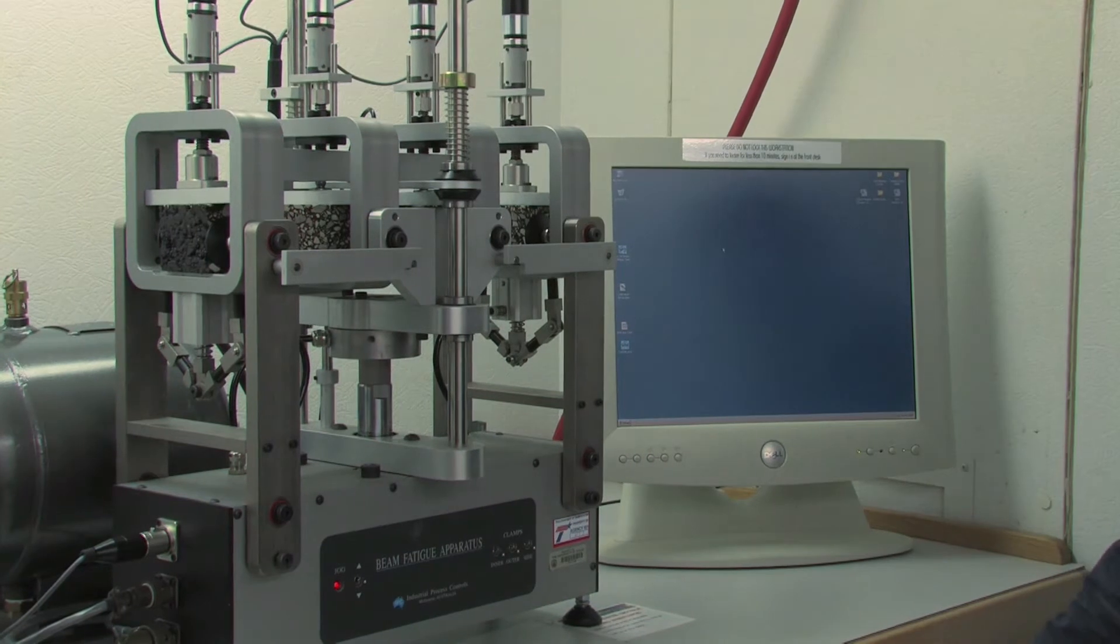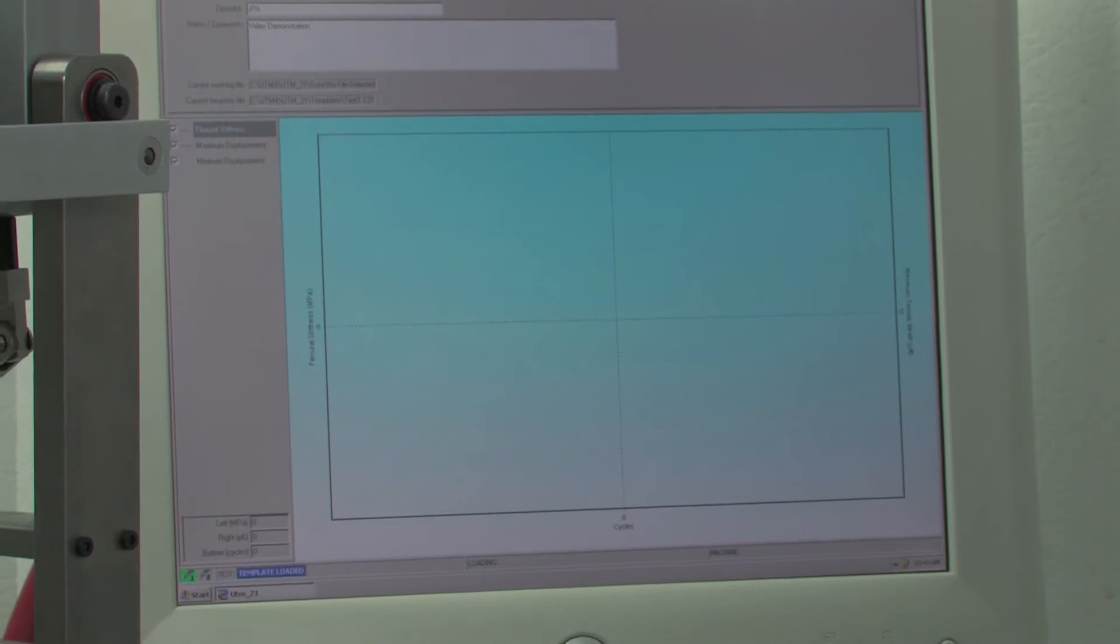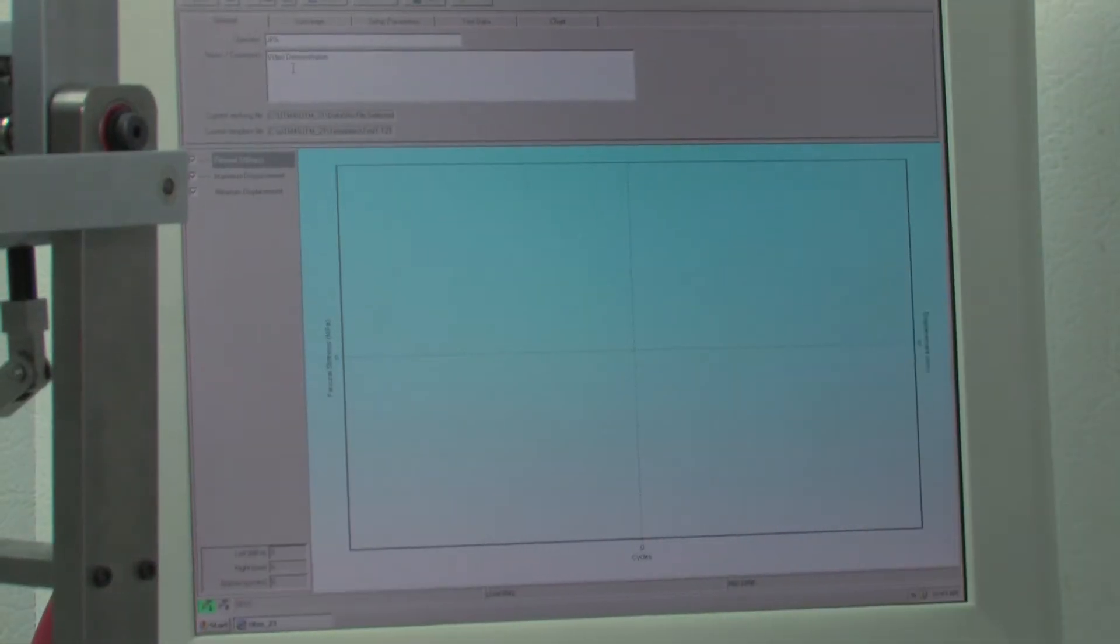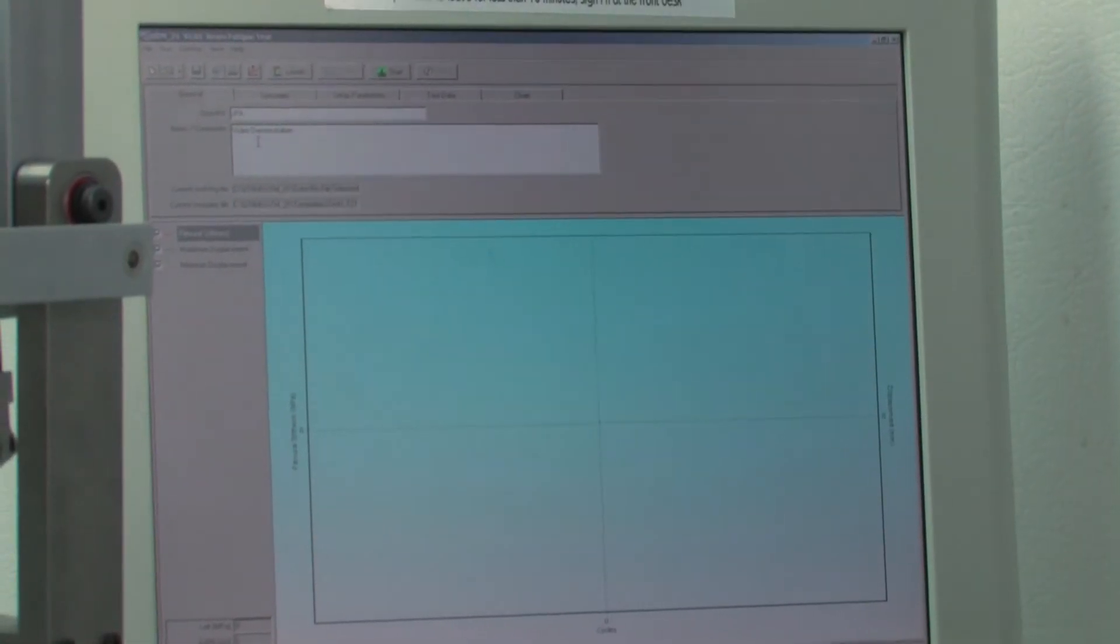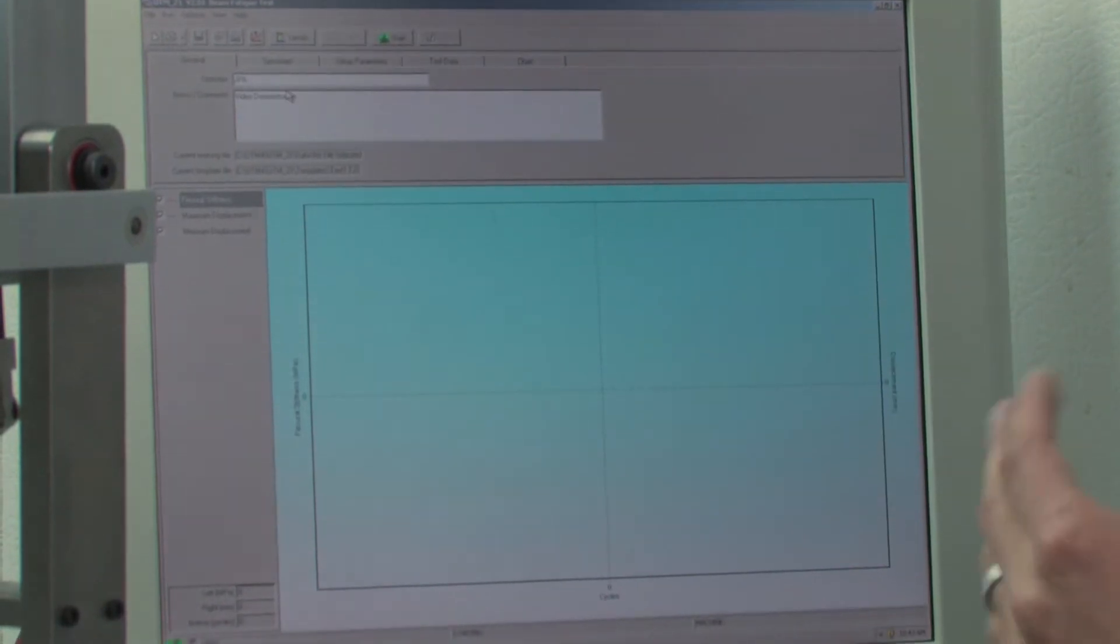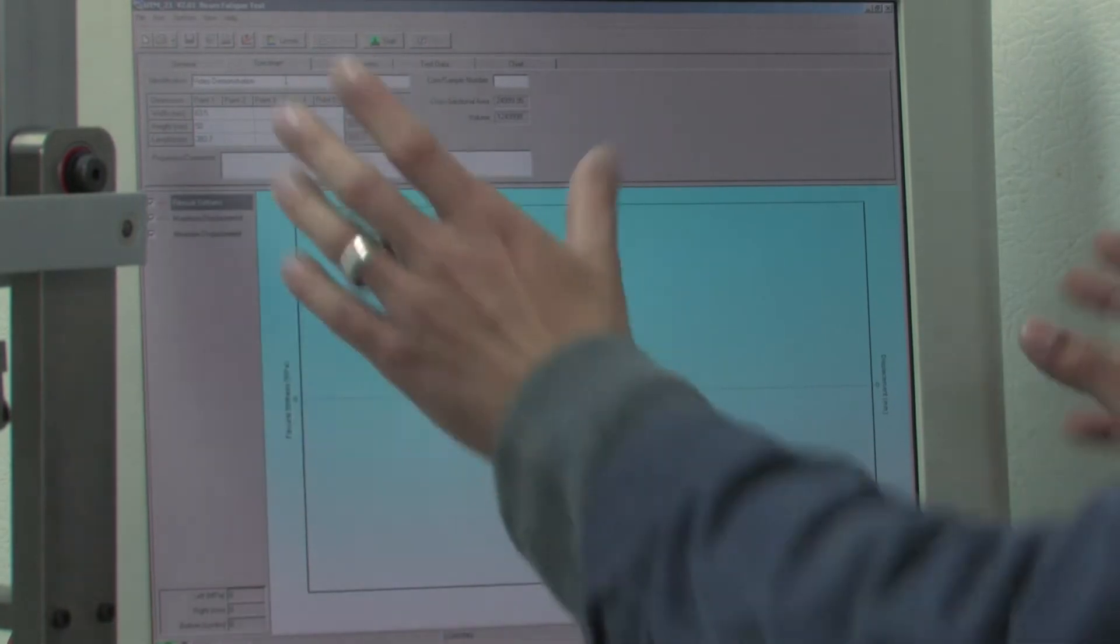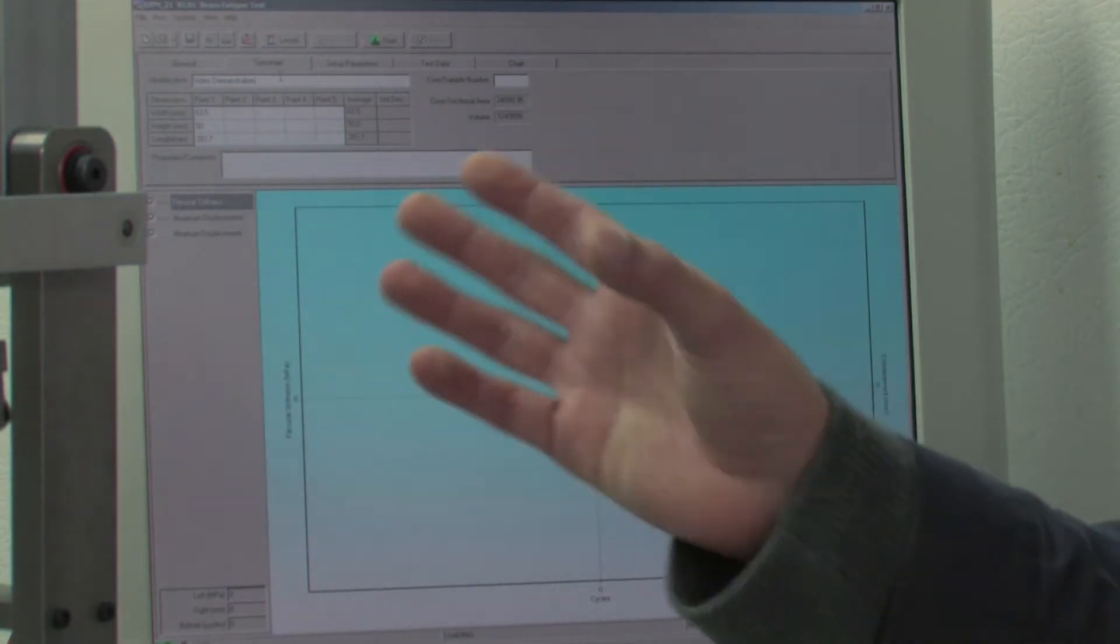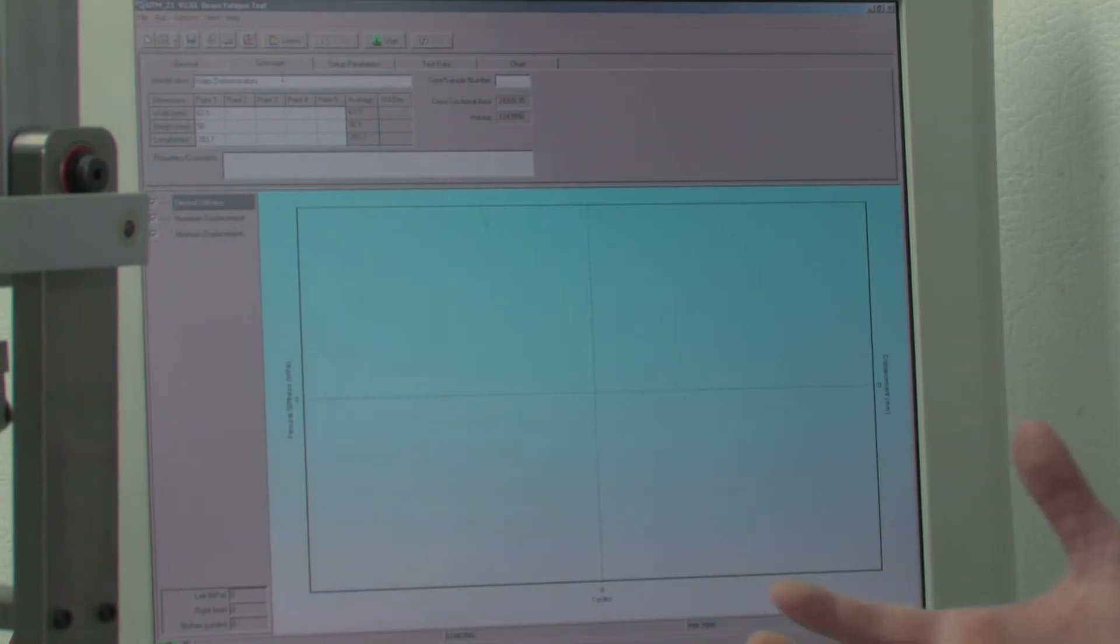Now we're going to make sure that the LVDT is correctly placed, so the next thing we do is open the software, the fatigue test software, and we just start a new test. The first page of the software just requires you to put who's operating and some additional comments if you want to identify this specimen later. The second tab is basically the same, and we just enter some information that we want to use to identify the sample, plus the geometrical information of your specimen that you're supposed to have measured previously.